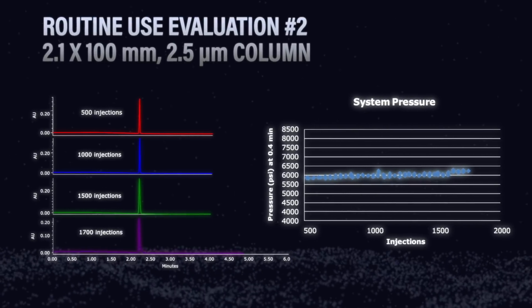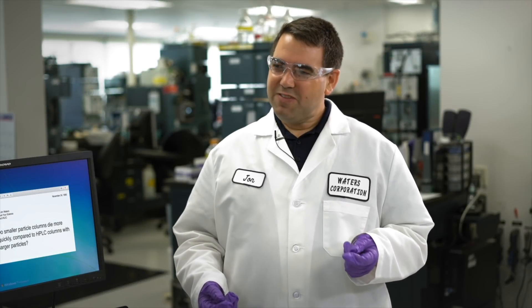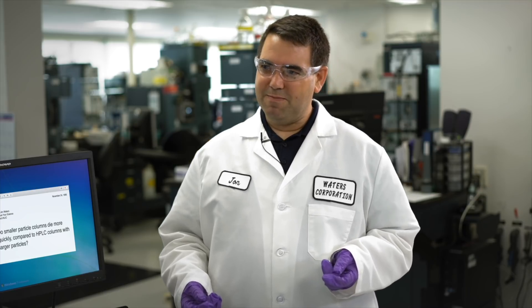Based on the experiments that we ran with that dirty tablet formulation, it really looks like the sub 2 micron column, the 1.7, it is more susceptible to plugging than the 2.5 micron column. You are correct. There's much less space between the 1.7 micron particles and the 2.5 micron particles. So if you're going to use the smaller particles, you have to take a little extra care in preparing your sample. You can't inject all of those things onto the column. So just because we can clean up the sample, let me show you what we can do if we take a couple of extra steps to remove those things.